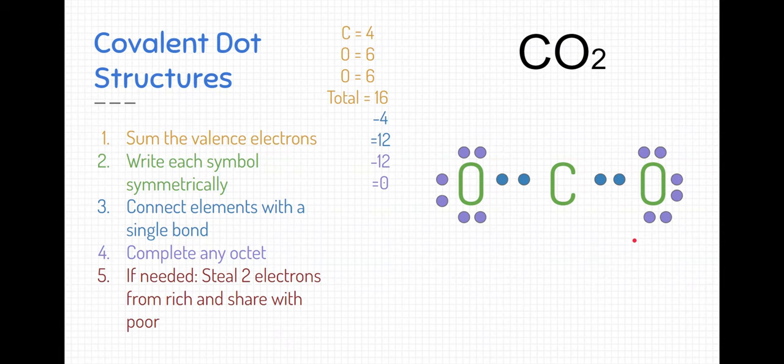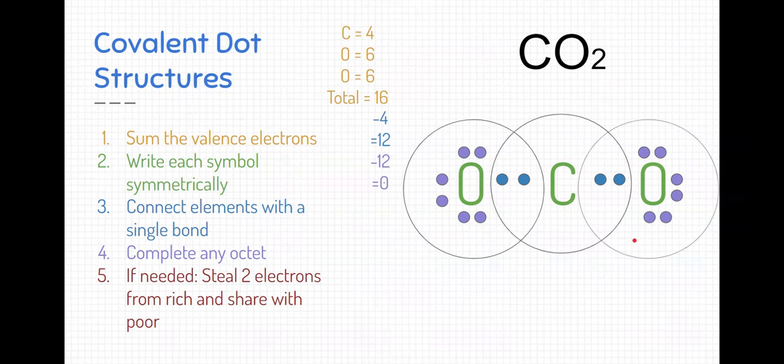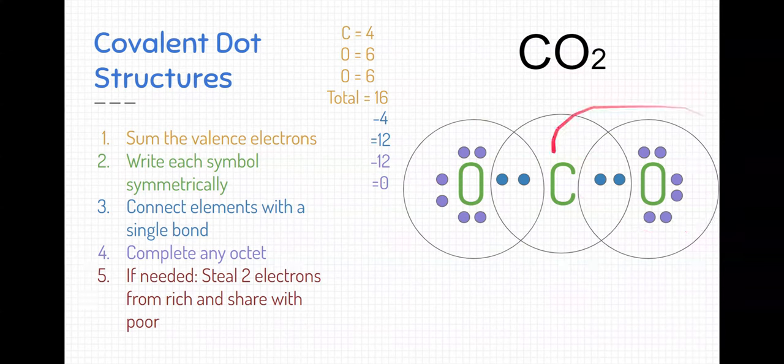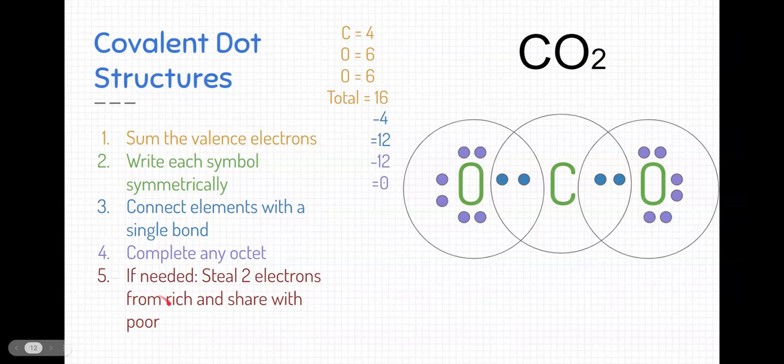But if you look at this compound, we're not quite complete. We don't have a full octet for all the elements. Each of the oxygens do. You can see by this Venn diagram here and this Venn diagram, they each have eight. But carbon is only stuck with four. How is carbon going to get its eight? Well, that's where we need to go to step five. This is the if-needed step. And I kind of call it the steal from the rich, give to the poor. This is the Robin Hood step. So we can see here that oxygens are each electron rich.